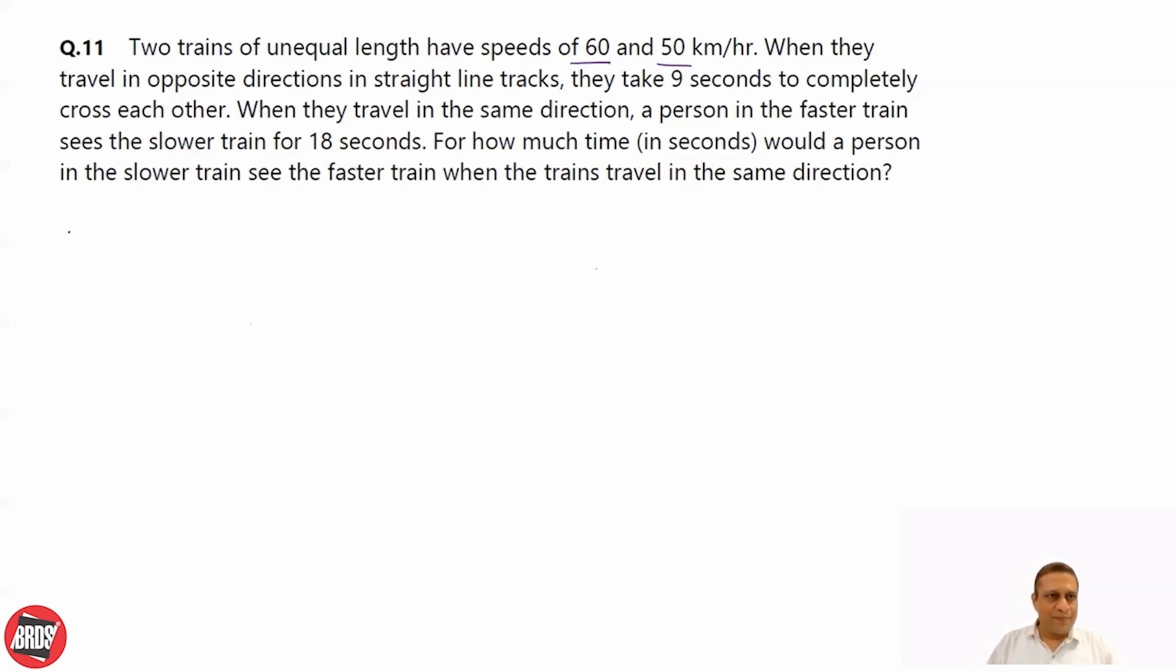The speed of trains is 60 and 50. When they travel in opposite direction, the relative speed is S1 plus S2, the speed of this train plus speed of this train, that is 60 plus 50, which is 110 km per hour. The distance will be L1 plus L2. Let's consider L1 is faster train, L2 is slower train.